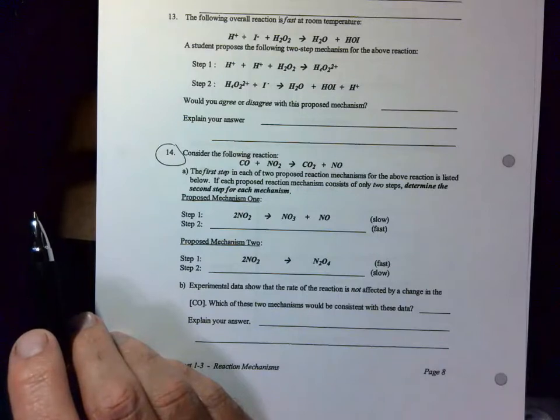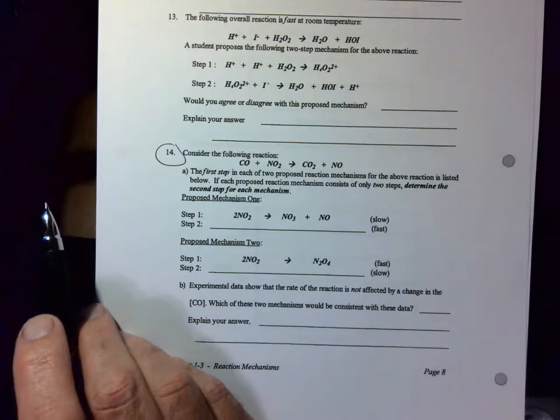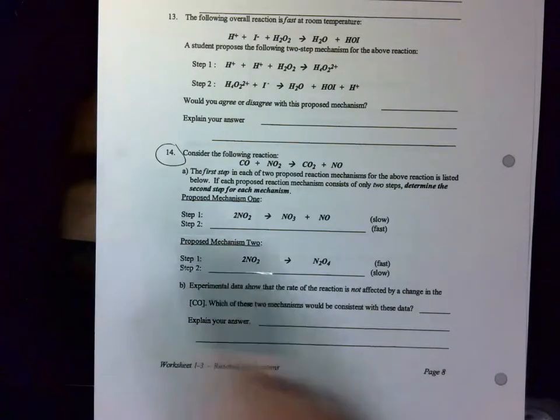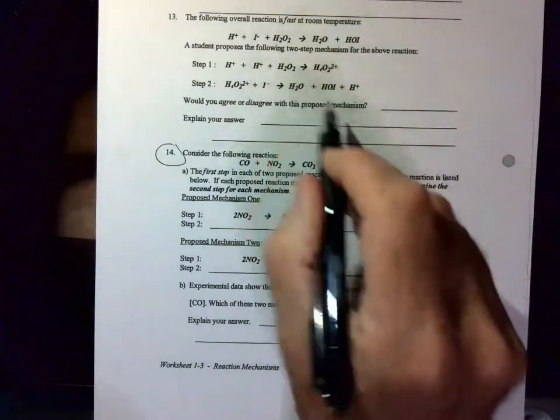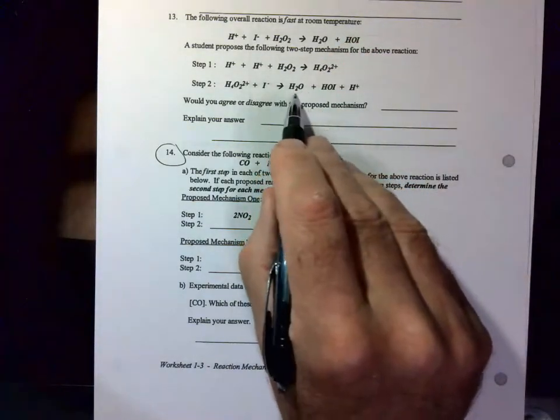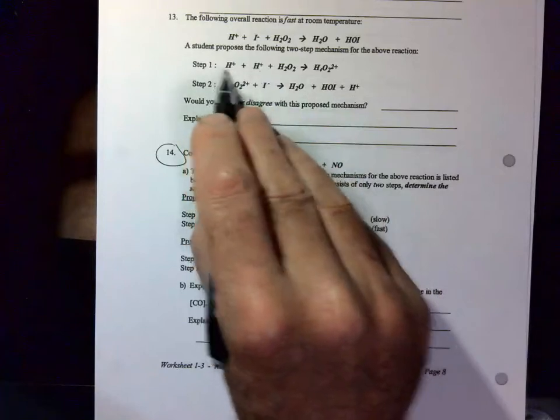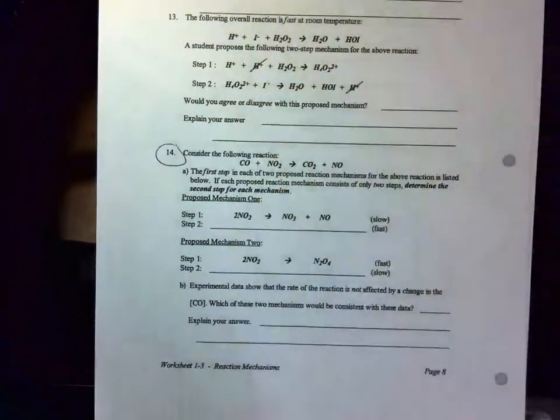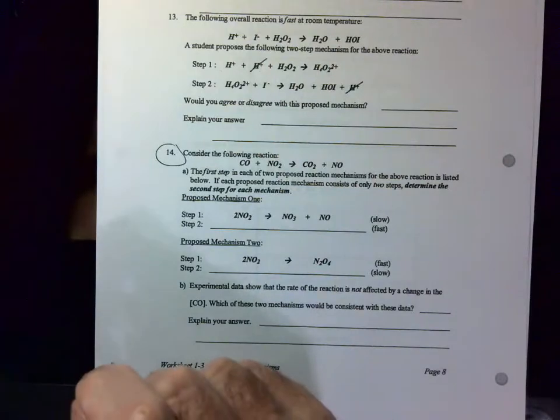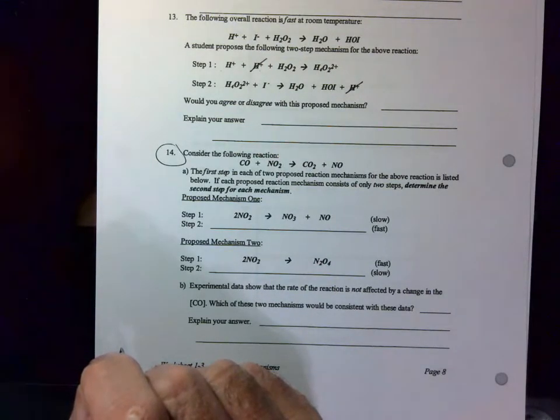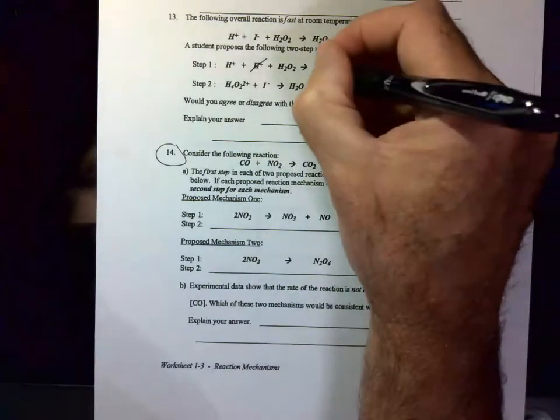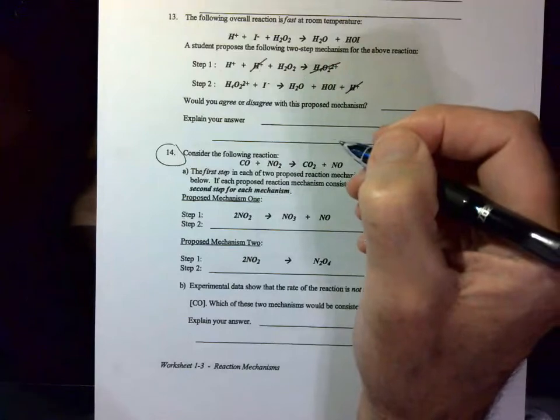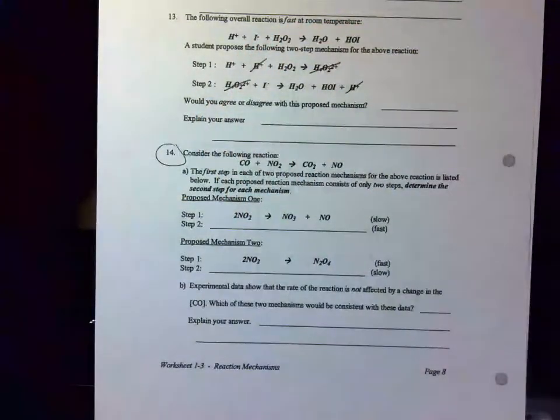So here's the way you attack this. First of all, what you do is you look for your catalyst. H2O2, none down there. H+, yep, we've got H+. We've got H+. Okay, so then what you want to do is you want to write your overall reaction out. Oh sorry, intermediates. We've got an intermediate there, an intermediate there.